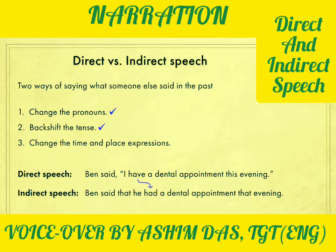Next, the verb has changed. When Ben spoke, his words were in the present tense, but when we report those words we change them to the past tense — this is called backshifting, that is, shifting the tense back to the past. We also see that 'this evening,' a time expression, has become 'that evening.' These are the three main changes we make when converting a sentence from direct to indirect speech.